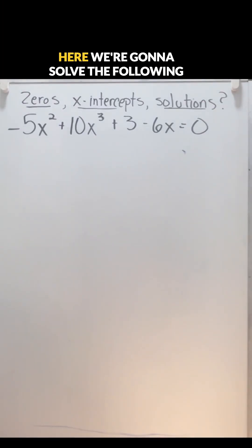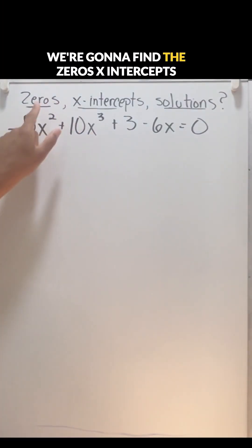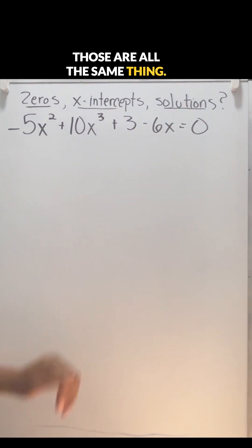Hi, Easy Breezy Math here. We're going to solve the following polynomial. Solving the polynomial means we're going to find the zeros, x-intercepts, and solutions. Those are all the same thing.